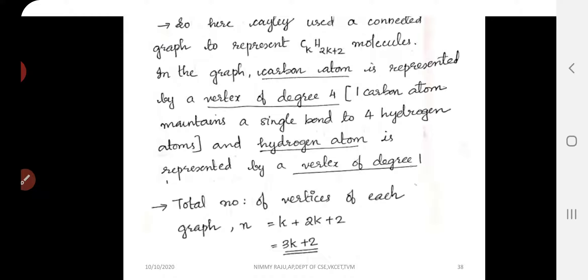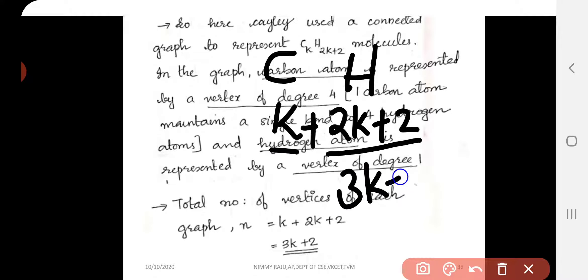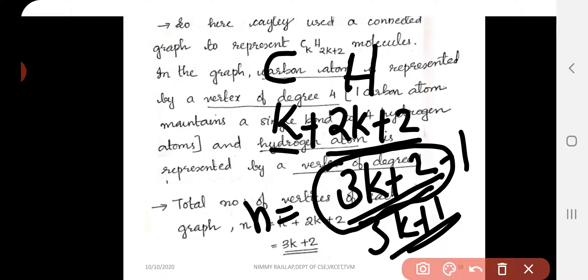A tree with n vertices has n−1 edges. The total number of vertices equals k + (2k+2) = 3k+2. Therefore the number of edges is n−1 = (3k+2)−1 = 3k+1.